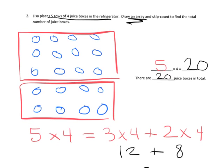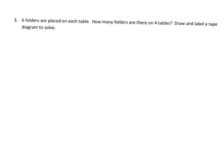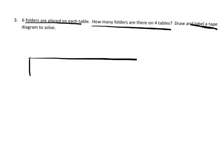In our last problem, we've got six folders placed on each table. How many folders are on four tables? Now this one says we want to draw a tape diagram. So we're going to draw our four tables. In this case, six folders are placed on each table, so that means we're going to have 6, 6, 6, 6. If we were to label this, we'd say four tables.